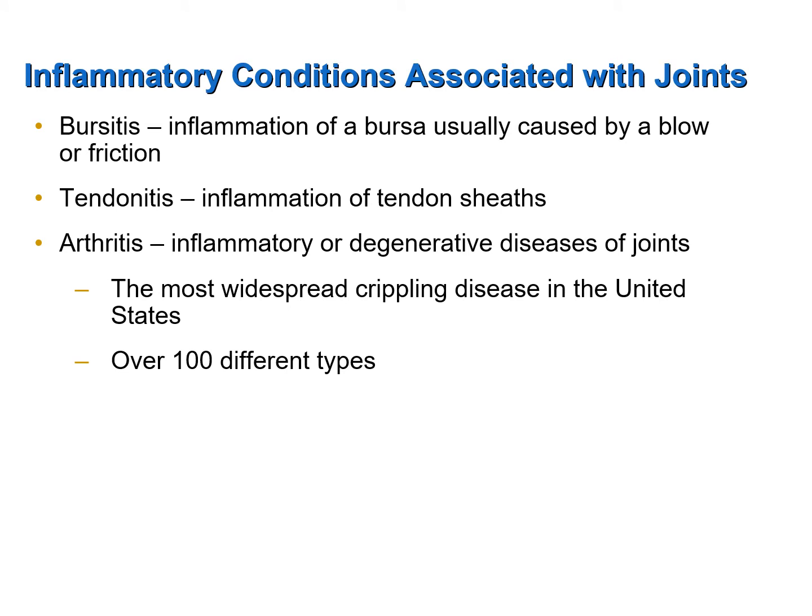Arthritis is an inflammatory or degenerative disease of the joints. Arthritis as a whole is the most widespread crippling disease in the United States and is the number one cause of disability in the United States as well. There are many types of arthritis — over a hundred different types — but we're only going to focus on the two most common types.